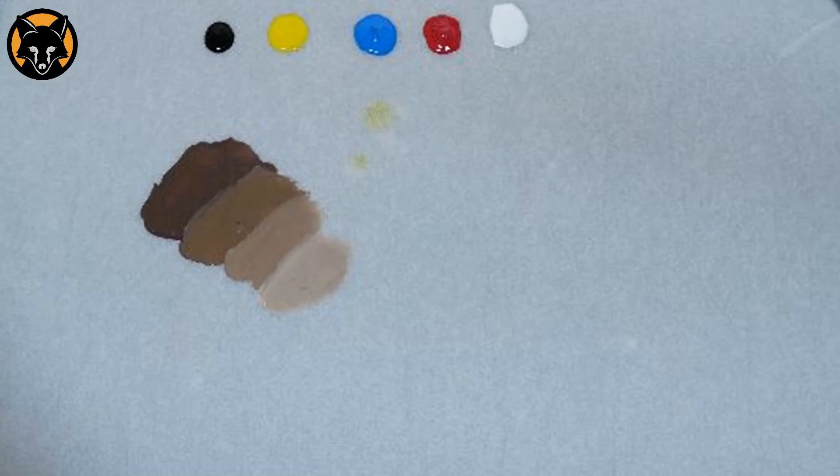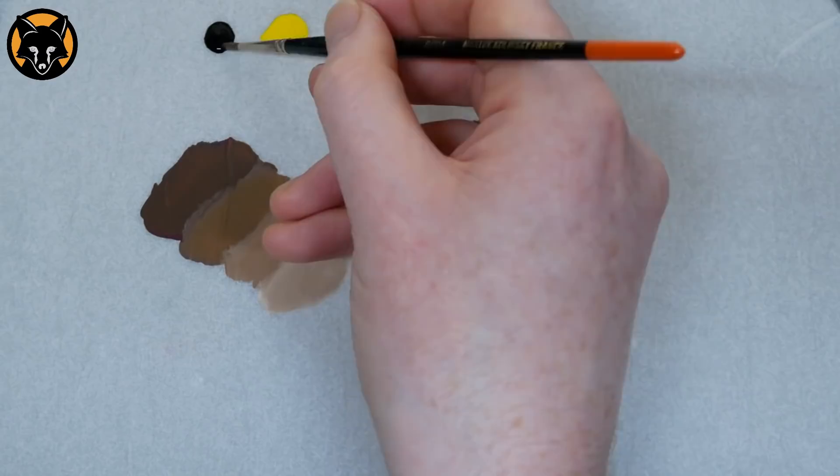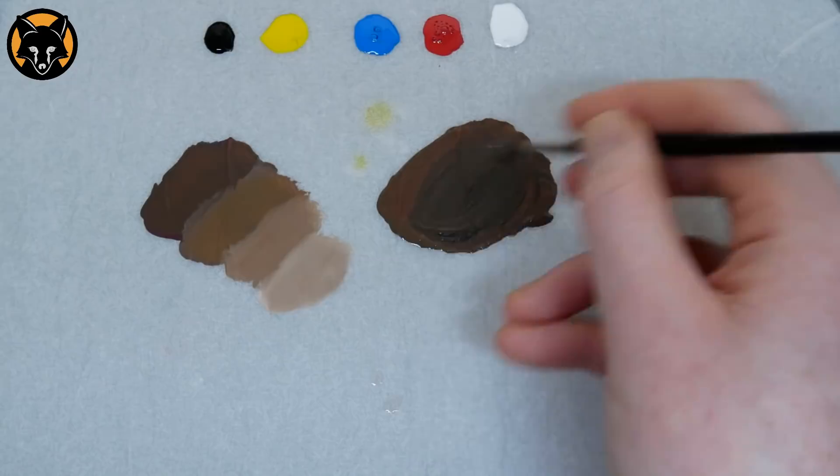If you want something even darker, just start in the same way, mixing up a basic brown, and then you're going to add some black to darken it. Now you can make this as dark as you like, it's really up to you, and it depends on how dark you want your skin tone to be.